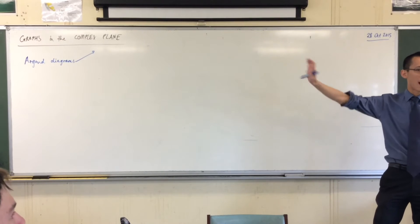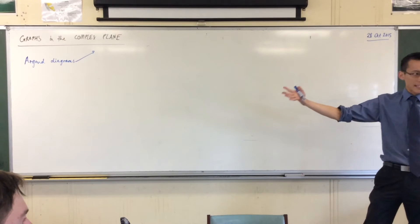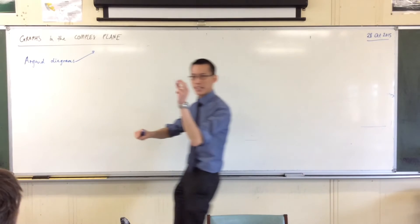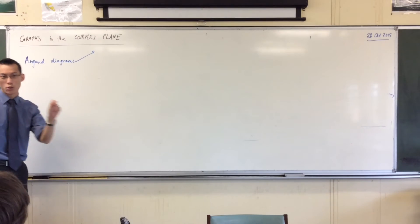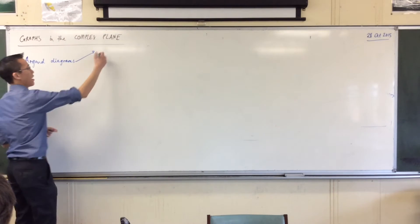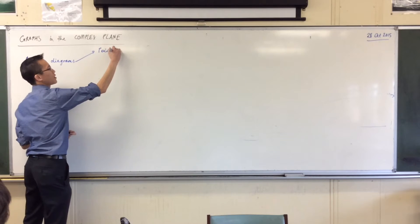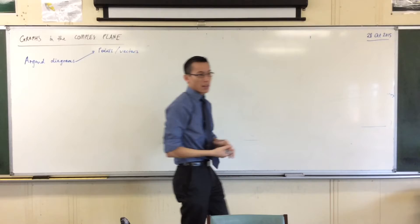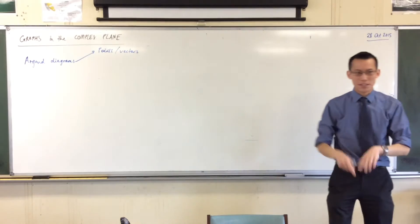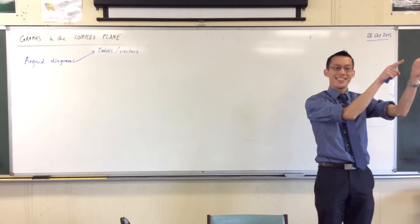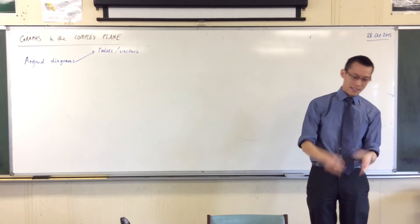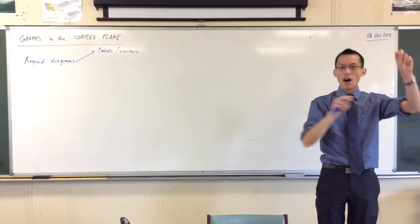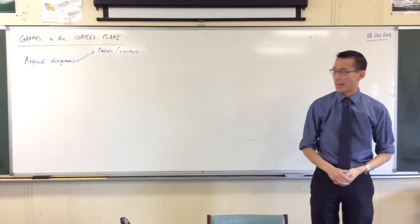So far we've been seeing that we can use Argand diagrams more or less exclusively to represent individual complex numbers as points or as vectors. But the important thing is, there are individual complex numbers - here's z1, there it is, here's z2, here's z1 plus z2, but they are all kind of isolated from each other.